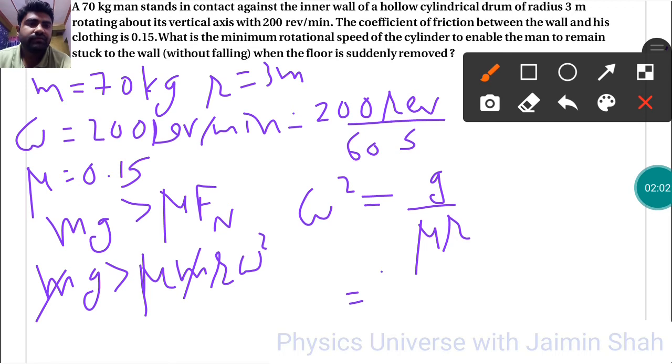So g value is 10, mu is 0.15, and R is 3. So here that's 1000 upon 45.